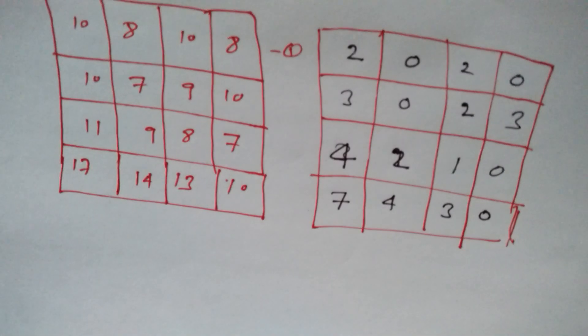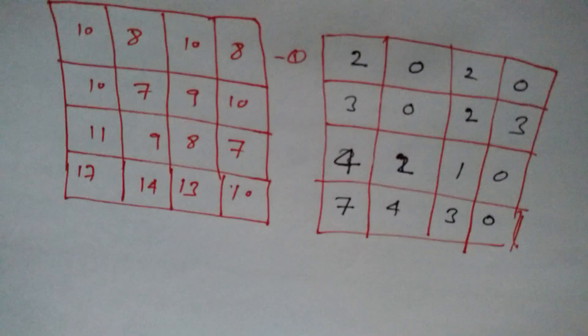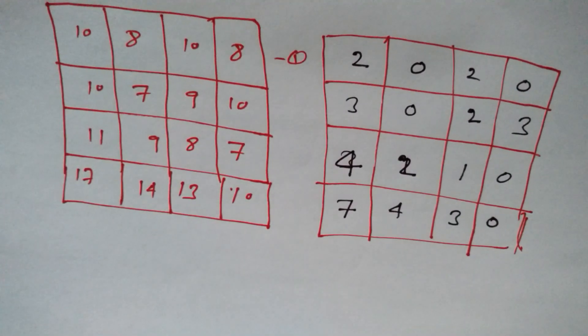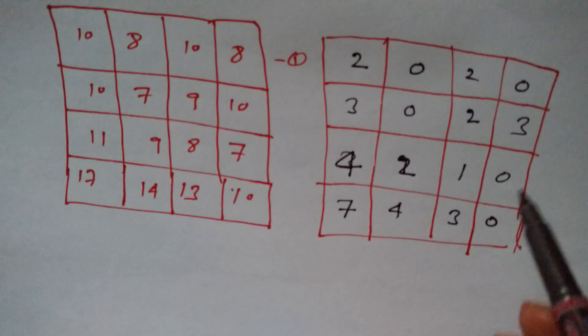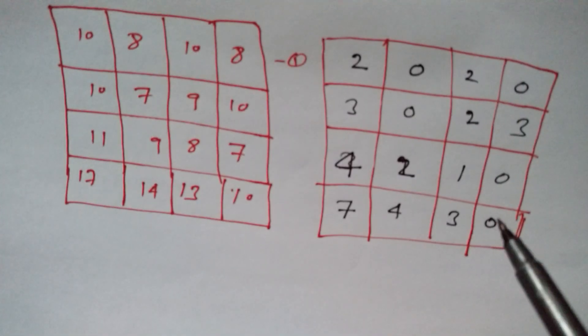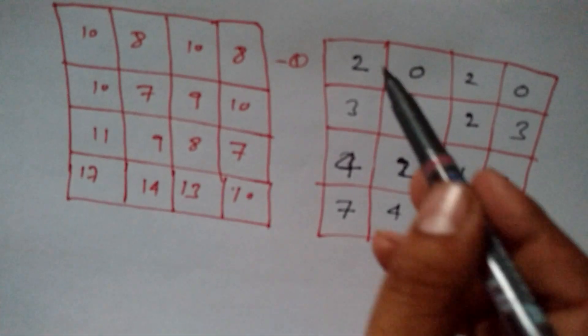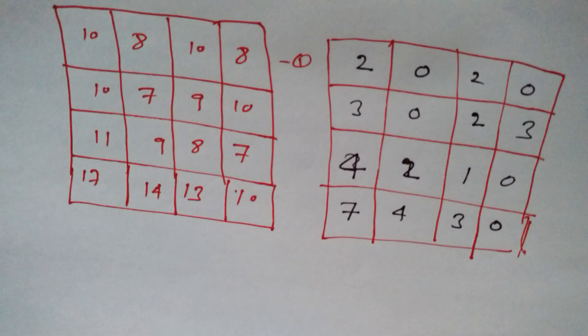So, this is all about what I did right now. Now, after just going through this step, what I have to do, I have to find out at least one 0 should be there in row or column. If I will check out rows, then definitely I will get at least one 0 in each row. But if you will check out column, then definitely you will see in the first column and in the third column, we are missing a value that is 0.